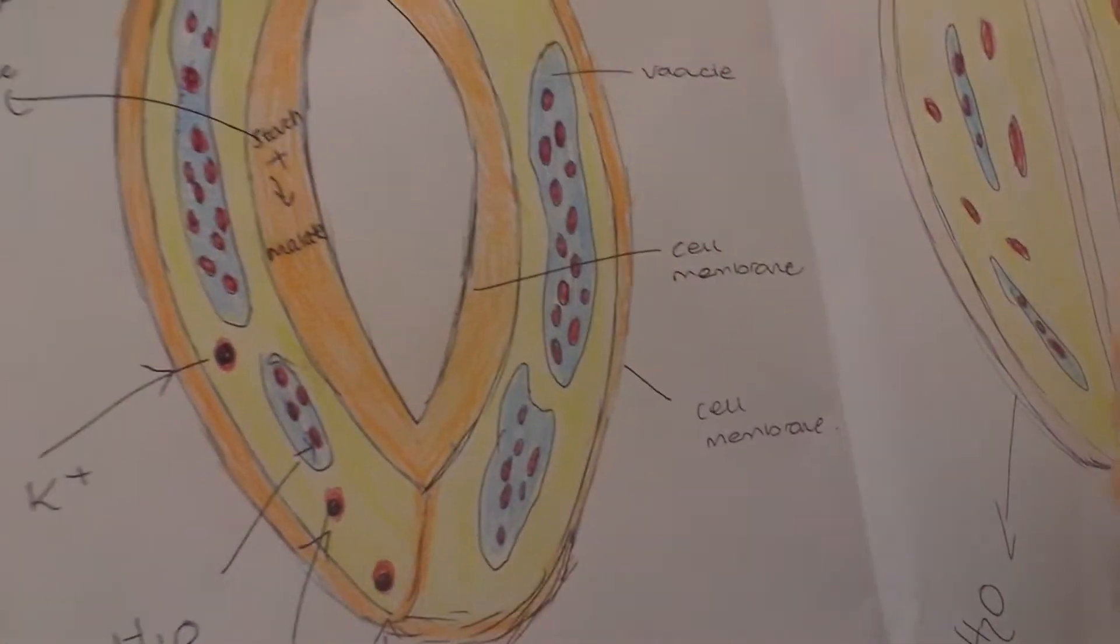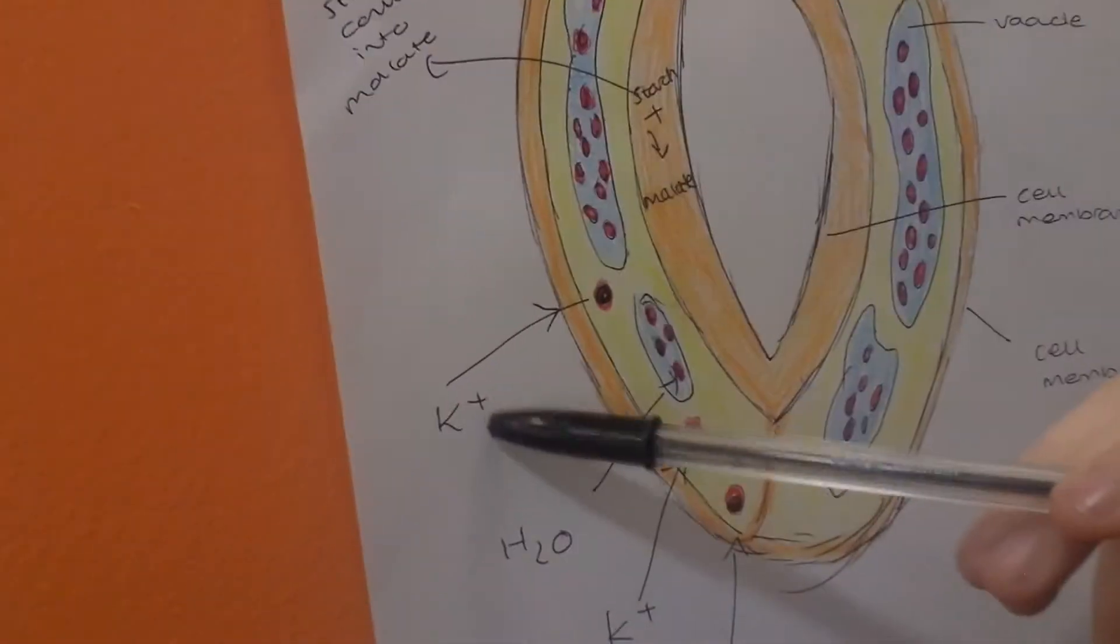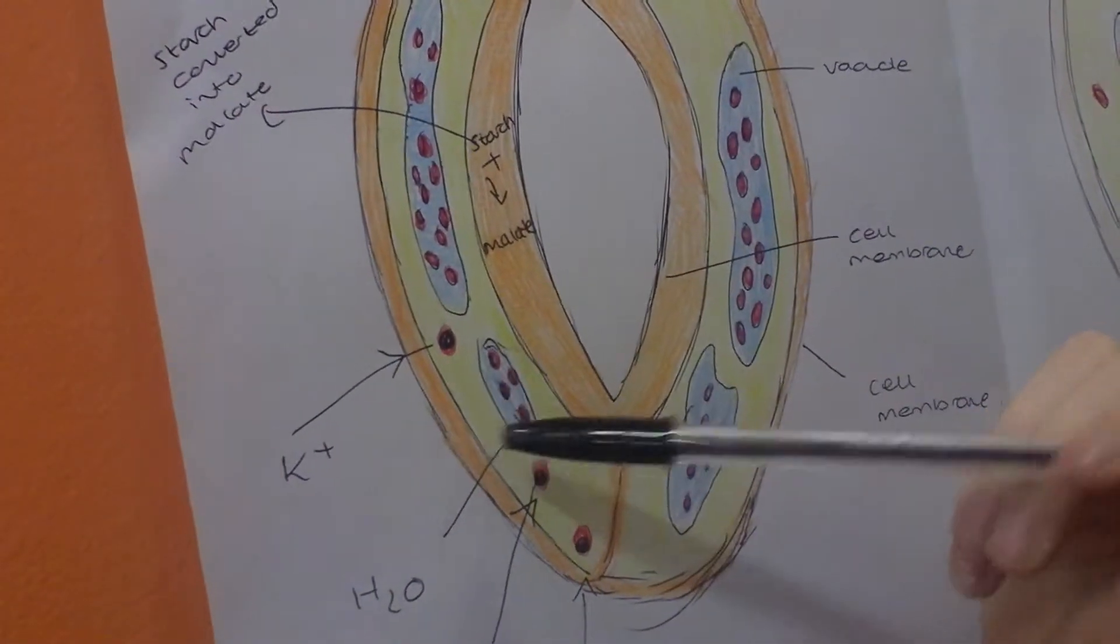During the day, stomata open. Potassium ions are pumped into the guard cells by active transport.